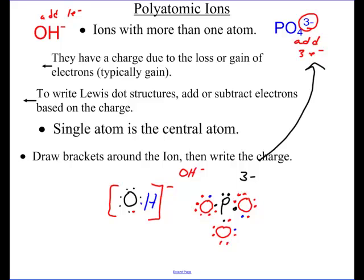Now look at each oxygen — one, two, three, four, five, six, seven, eight. Everyone has an octet. To finish, I'll put a bracket around it indicating it's an ion, and write the minus-3 charge. That's a polyatomic ion.